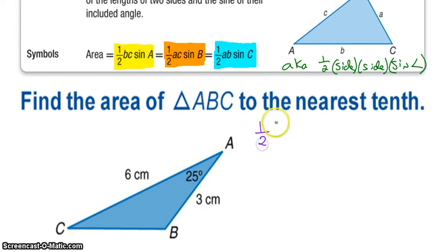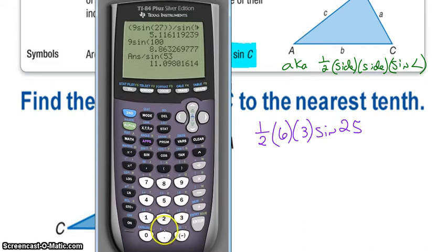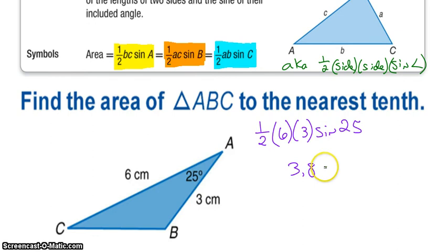So one half. One side is 6. Another side is 3. And I want the sine of 25. I'm just going to type that straight into my calculator. One half or you can type in 0.5. Times 6. Times 3. Times my sine of 25. The area of this triangle is about 3.8. And if you want to be fancy and include units, centimeters squared.